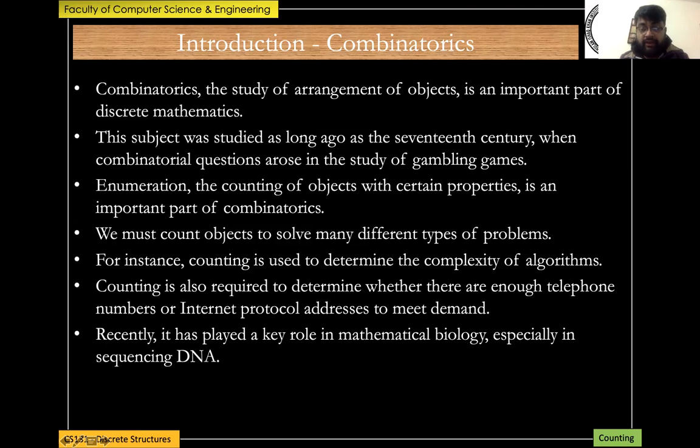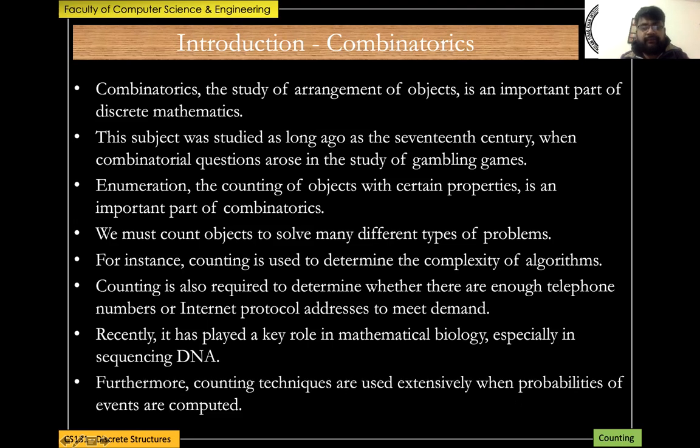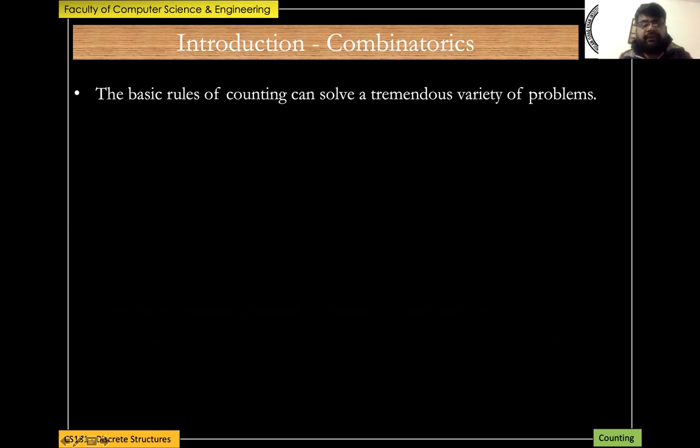In mathematical biology or bioinformatics, in particular in the sequencing of DNA, this particular rule of combinatorics and enumeration has played a very key important role, and hence it has found its applications in various fields including biology as well. Wherever and whenever you're going to talk about probabilities of events, you're going to use counting techniques. In particular, you'll be studying this course, probability and statistics in the fourth semester or even earlier, and in that case you require counting techniques extensively.